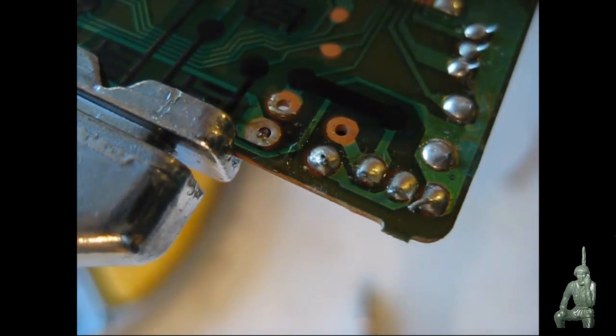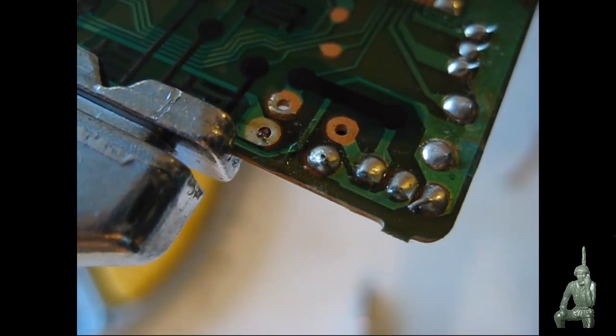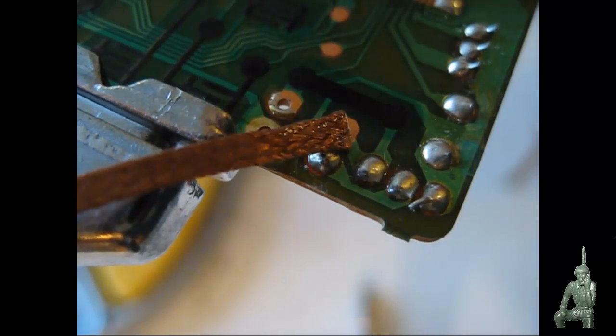So what I'm going to do is bring the wick in, and bear with me I'm working around the camera here. I'm going to place the wick on that joint and then I'm going to put the soldering iron on that joint and we're going to heat it up.